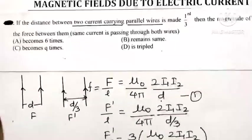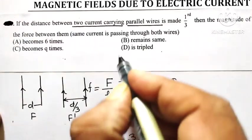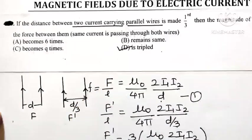So it becomes tripled, is tripled. So option d is the correct option for this question.